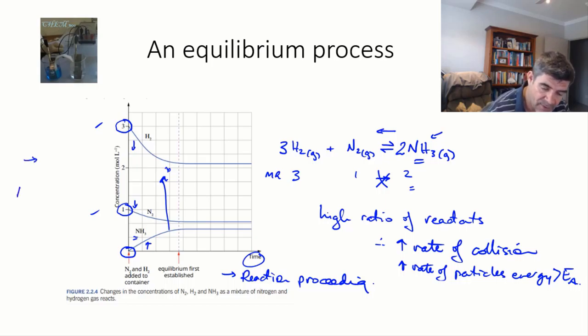But as the concentration of the NH3 starts to increase, then we will start to have the reverse reaction starting to occur as well until it reaches a point where these lines are horizontal. And, of course, horizontal lines are an indicator of equilibrium.